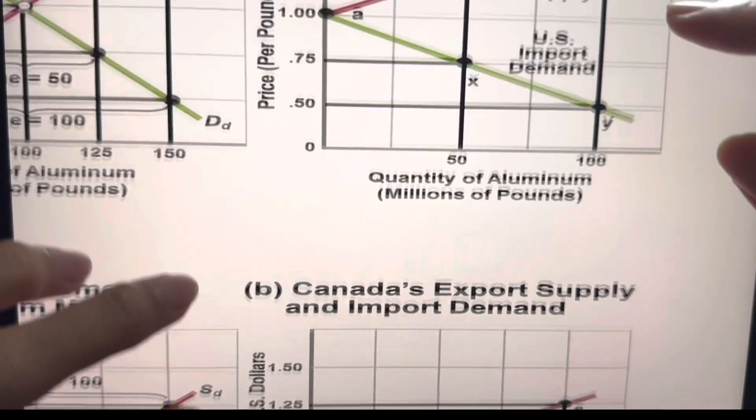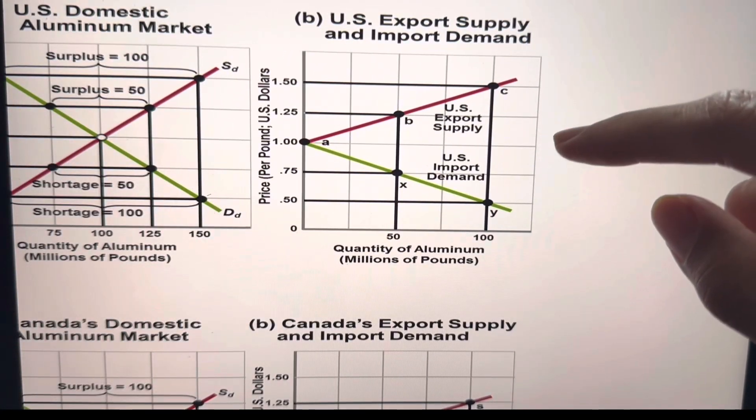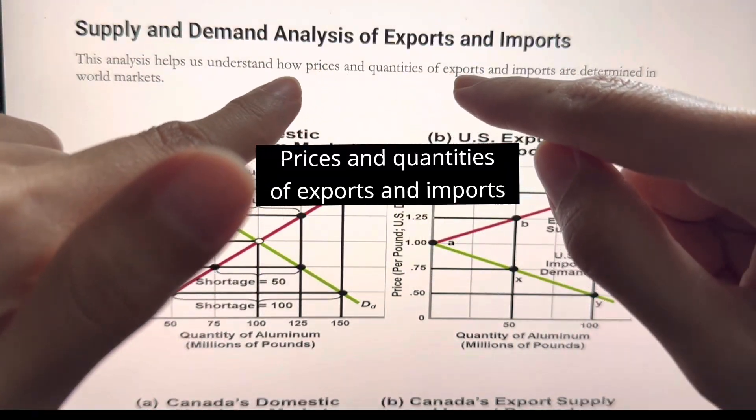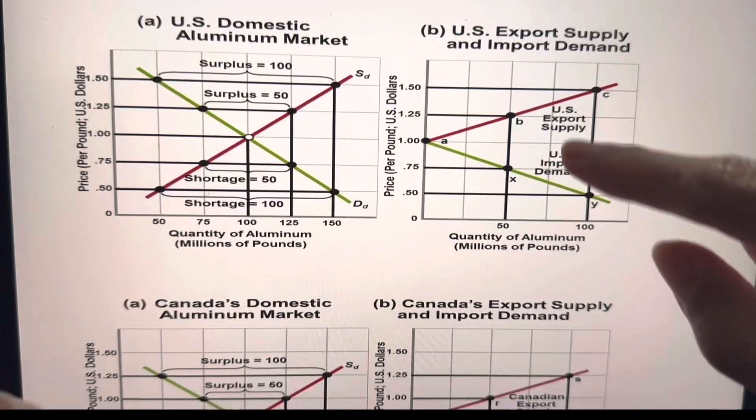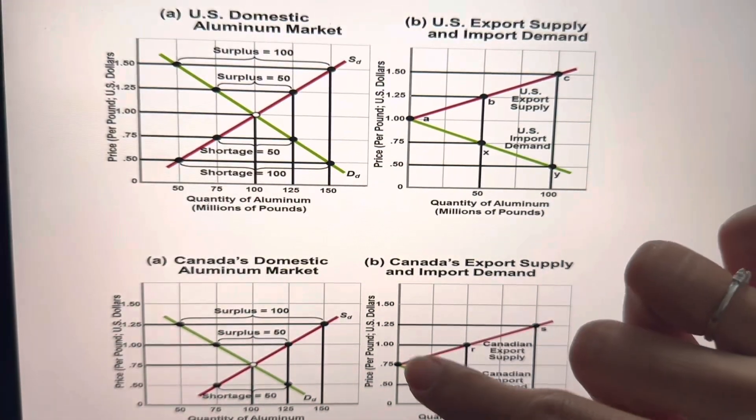So why are we learning these two import demand and export supply curves for these two countries? Because we want to determine prices and quantities in the world market. So what we do now is we combine these two. We take this, we put it on top of the other countries. So this is what we have.